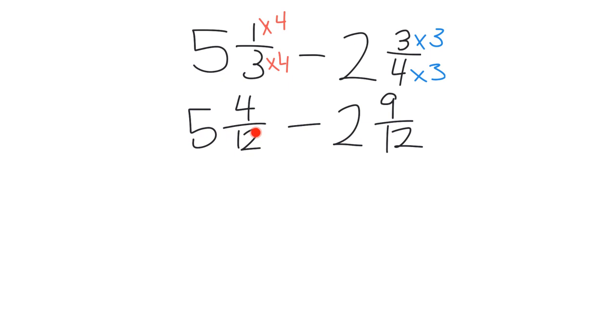Now parents and teachers, a lot of students are going to want to do 9 minus 4 and get 5, but that's not true. That's not accurate in this case, right? Because we're really doing 4 twelfths take away 9 twelfths. So if anything we'd be going into negatives.